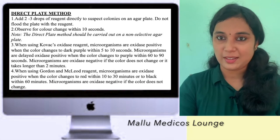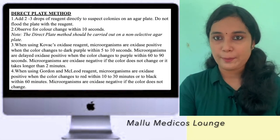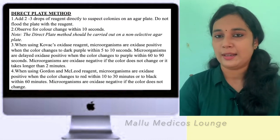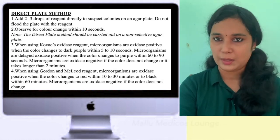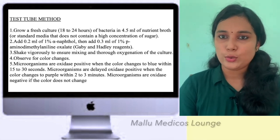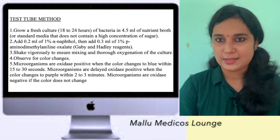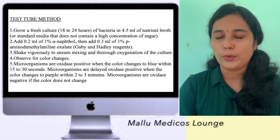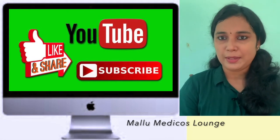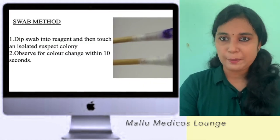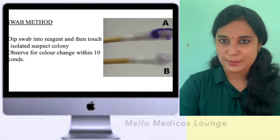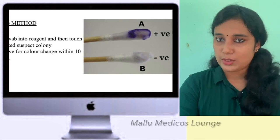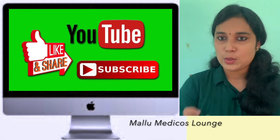The direct plate method involves adding the oxidase reagent directly onto the colony on the culture plate and observing for a deep purple-blue color. The test tube method uses a freshly prepared oxidase reagent with a sterile loop or wooden applicator stick. The swab method uses sterile swabs with the oxidase reagent applied to the colony, and a purple-blue color change indicates a positive result.